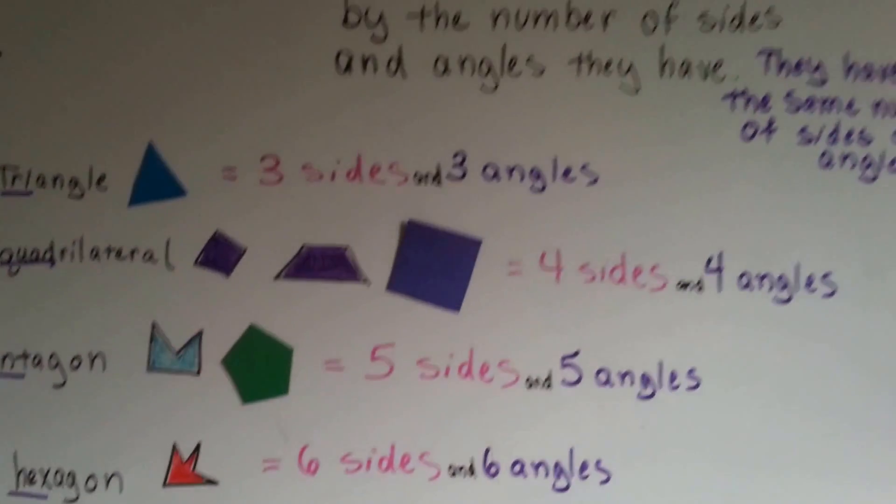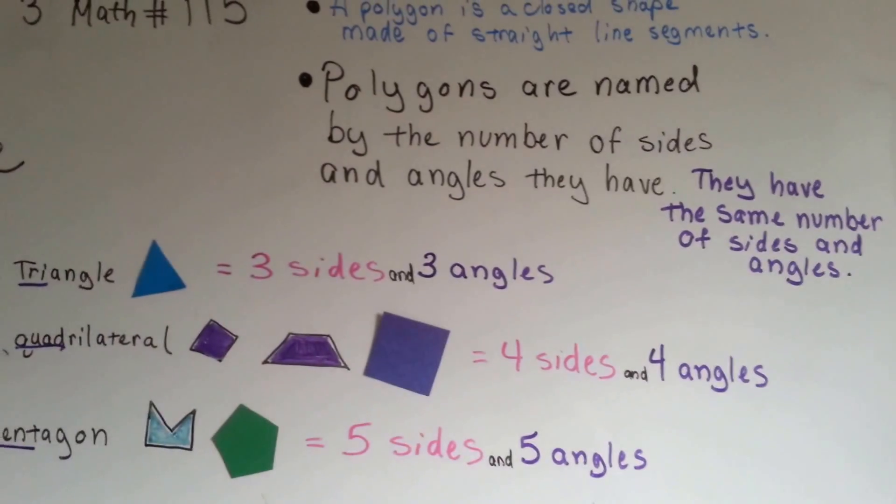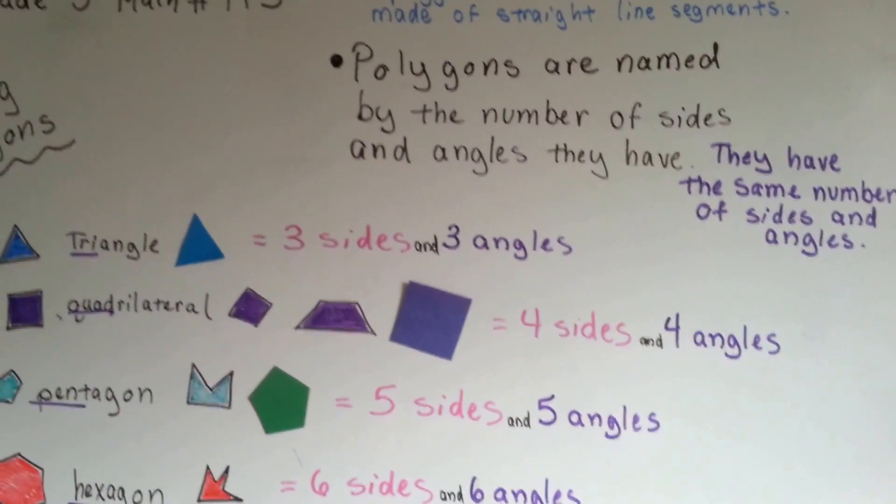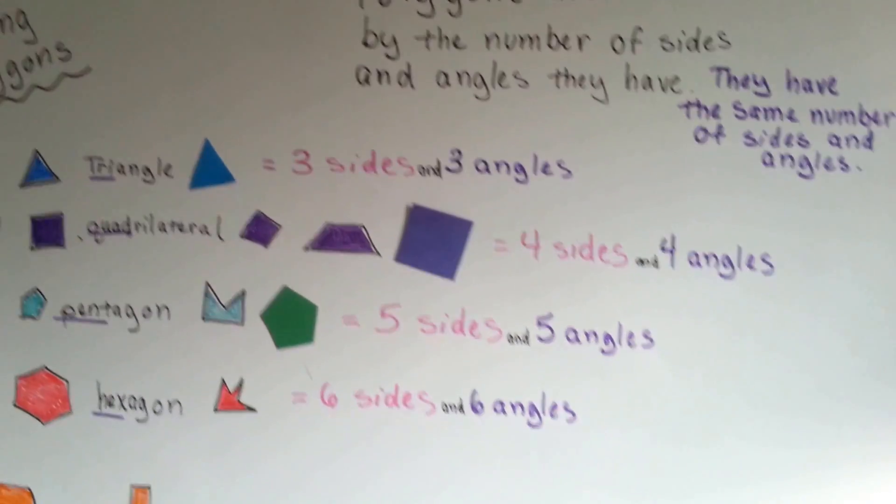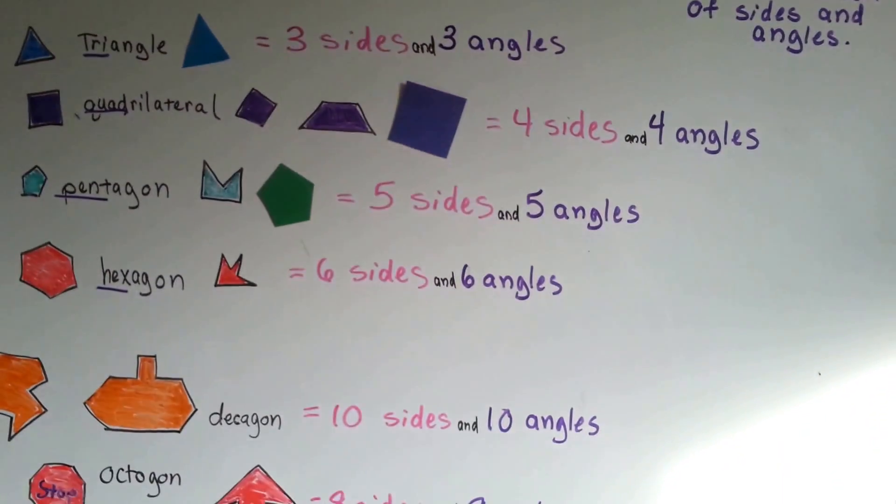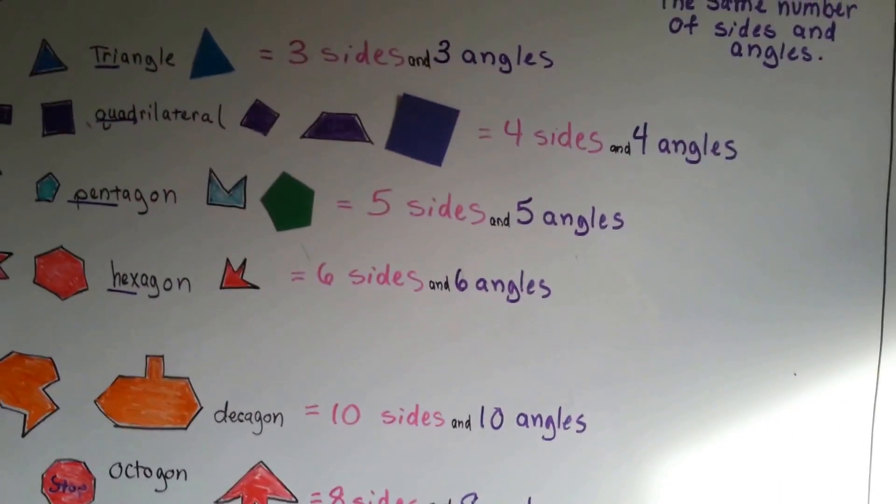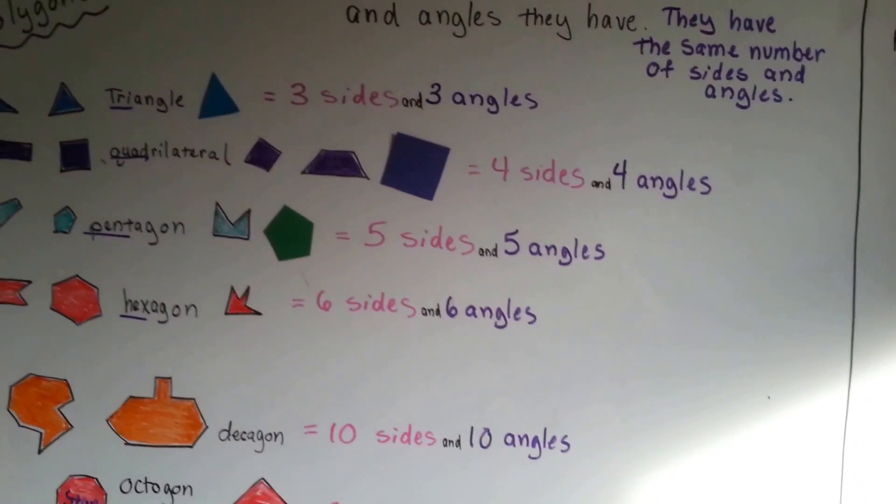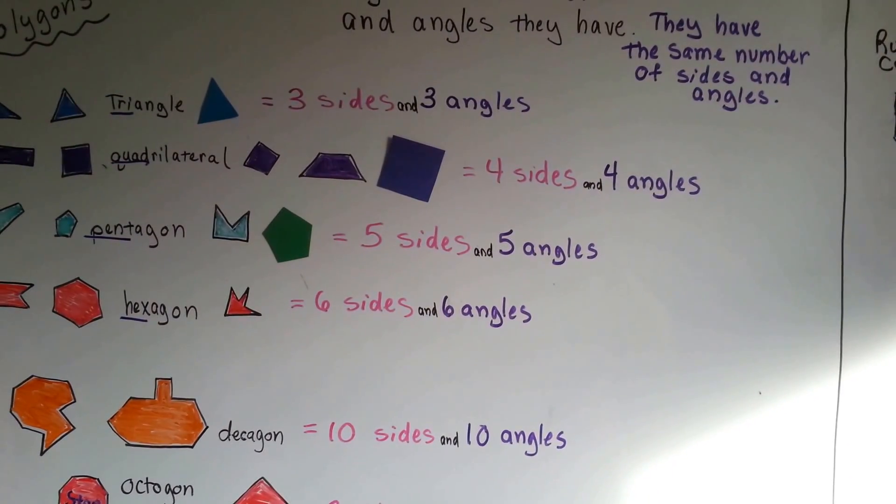So remember, they've got the same number of sides and angles, and they have to be closed and made of straight line segments. And those are some of the polygons that we have in math. I'll see you next video.